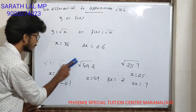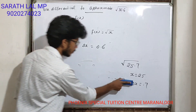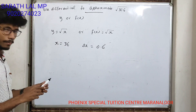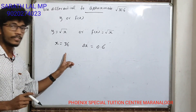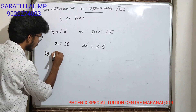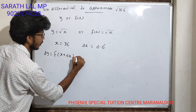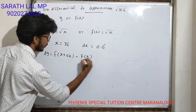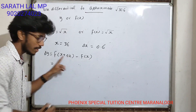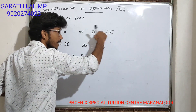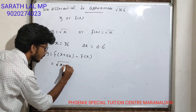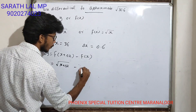This is 36.6. We choose two steps. The first step: delta y equals f of x plus delta x minus f of x. Since f of x equals root x, we get f of x plus delta x equals root of x plus delta x, minus f of x which is root x.